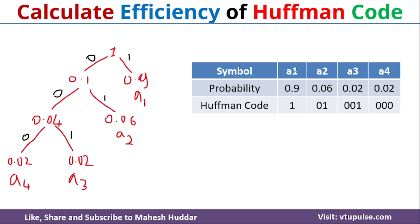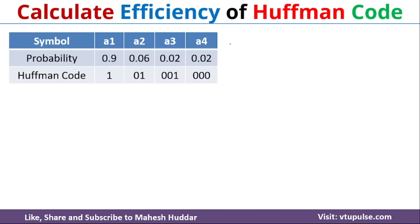Huffman code for A1 is 1, A2 is 01, A3 is 001, and A4 is 000. Once you get the Huffman codes for each of these symbols, next we need to calculate the total number of bits required to represent this particular Huffman coding.